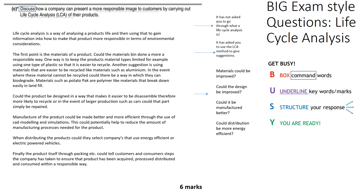One way is to keep product material types limited — for example, using one type of plastic so it is easier to recycle. Another suggestion is using materials that are easier to recycle, such as aluminium. In the event where materials cannot be recycled, could there be a way they can biodegrade? Materials such as potato-pack polymer-like materials break down easily in landfill.